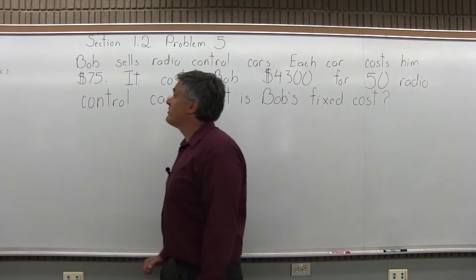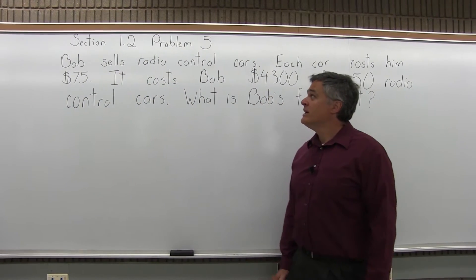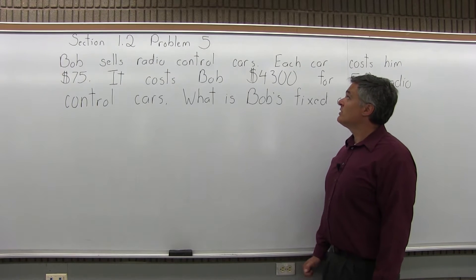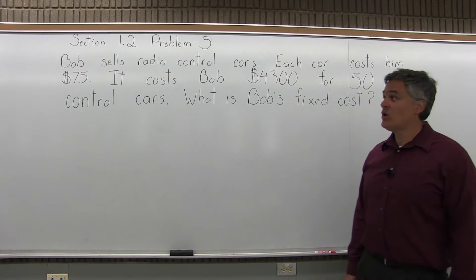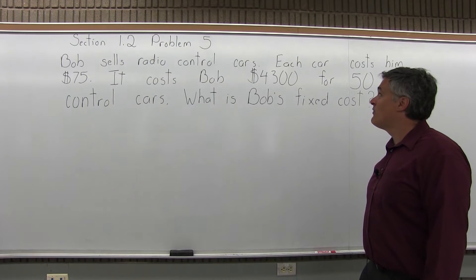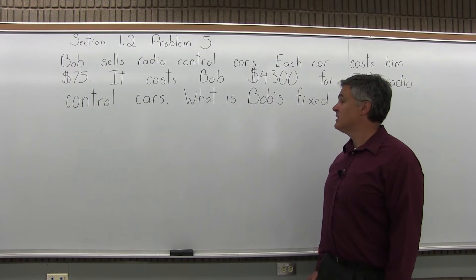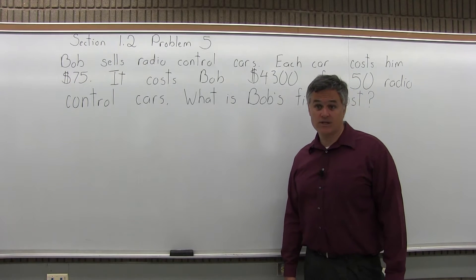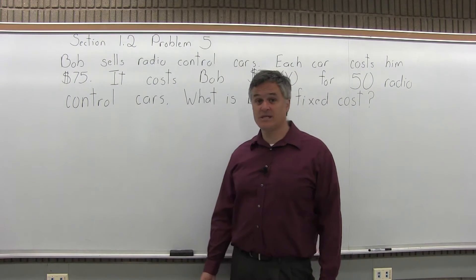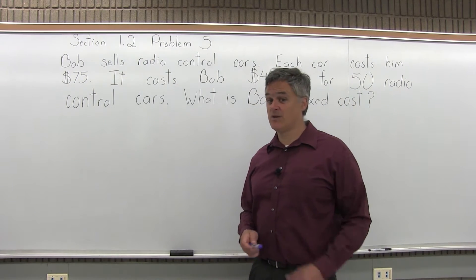This is Problem 5 from Section 1.2 of the homework. It says Bob sells radio-controlled cars. Each car costs him $75. It costs Bob $4,300 for 50 radio-controlled cars. What is Bob's fixed cost? In other words, what's the cost for Bob to stay in business even if he doesn't sell any radio-controlled cars?